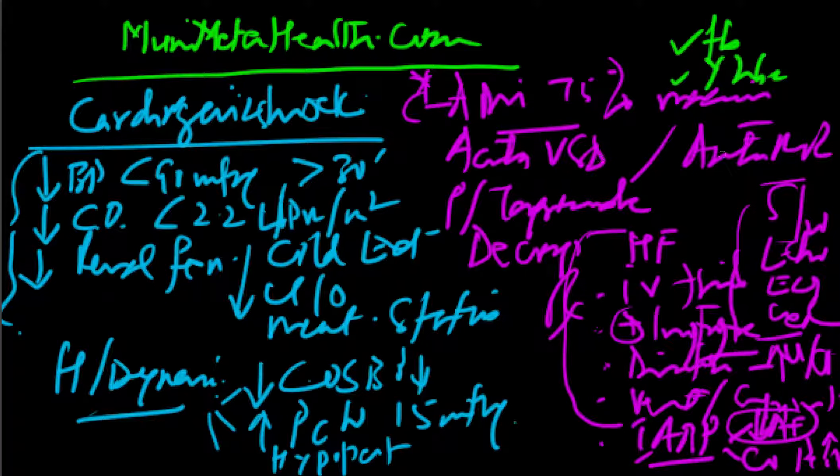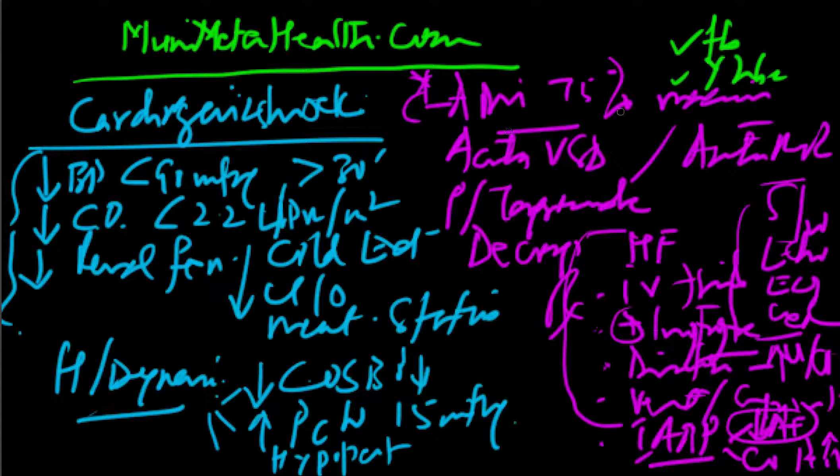Remember, acute VSDs and acute MRs should go immediately to the OR for repairs. Tamponades will require pericardiocentesis on an emergent basis by bedside, sometimes in the OR. And a massive MI should be addressed with revascularization, so an immediate angiogram and a revascularization, preferably multiple stents and or bypass may be necessary in addition with an intra-aortic balloon pump assist.